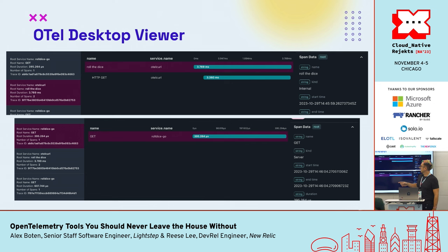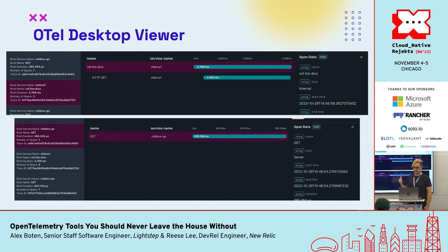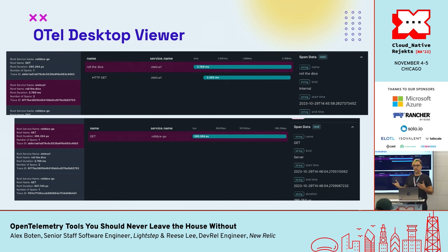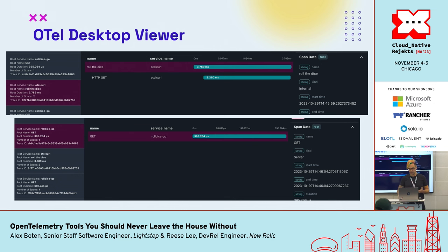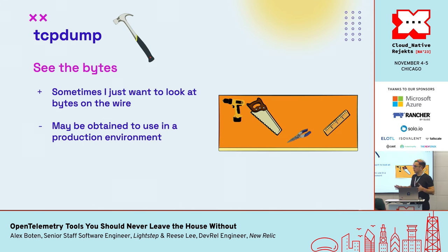I also had a Go application. Looking at the OTEL Desktop Viewer, I could see the curls coming from the client and the responses from the server, but they weren't connected. This looked like a context propagation problem. For context to be propagated between the client and server, there's usually some kind of propagation mechanism — usually HTTP headers. Something wasn't working, so I expected to look at the output for my request headers and see something.